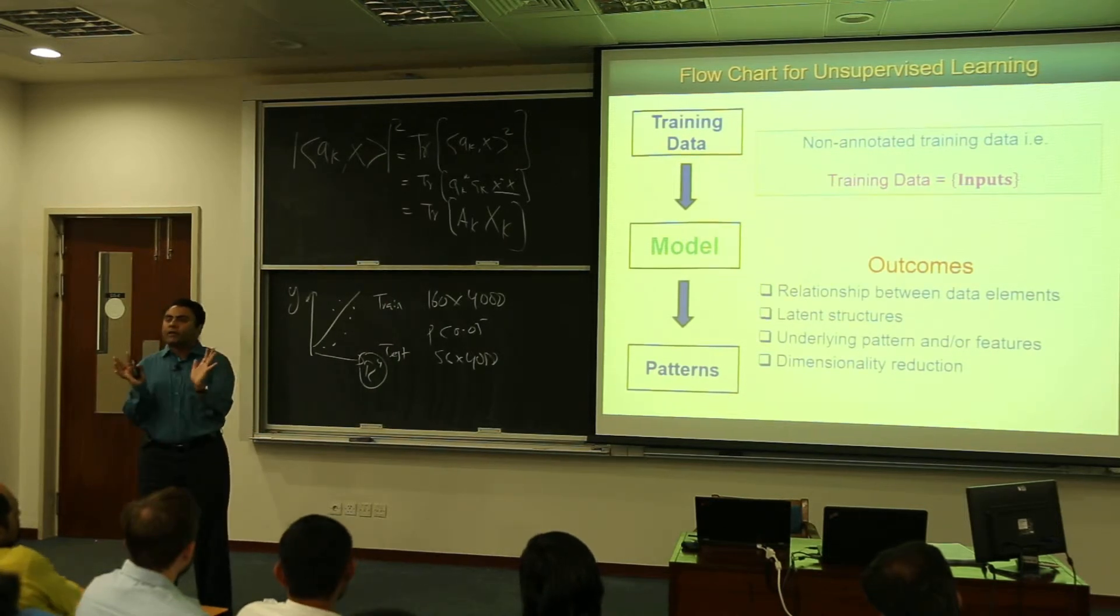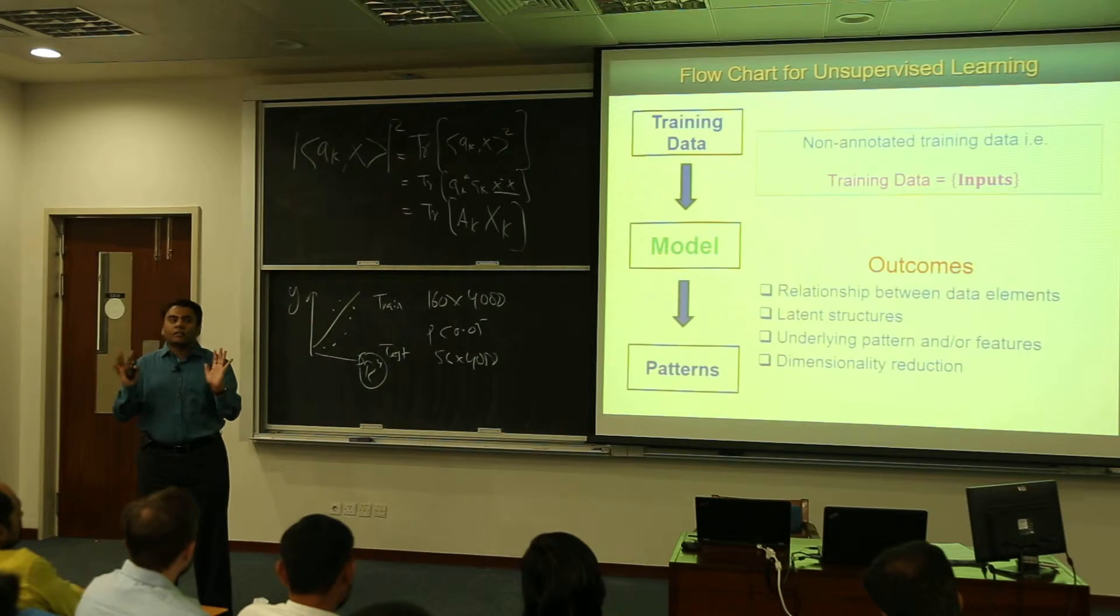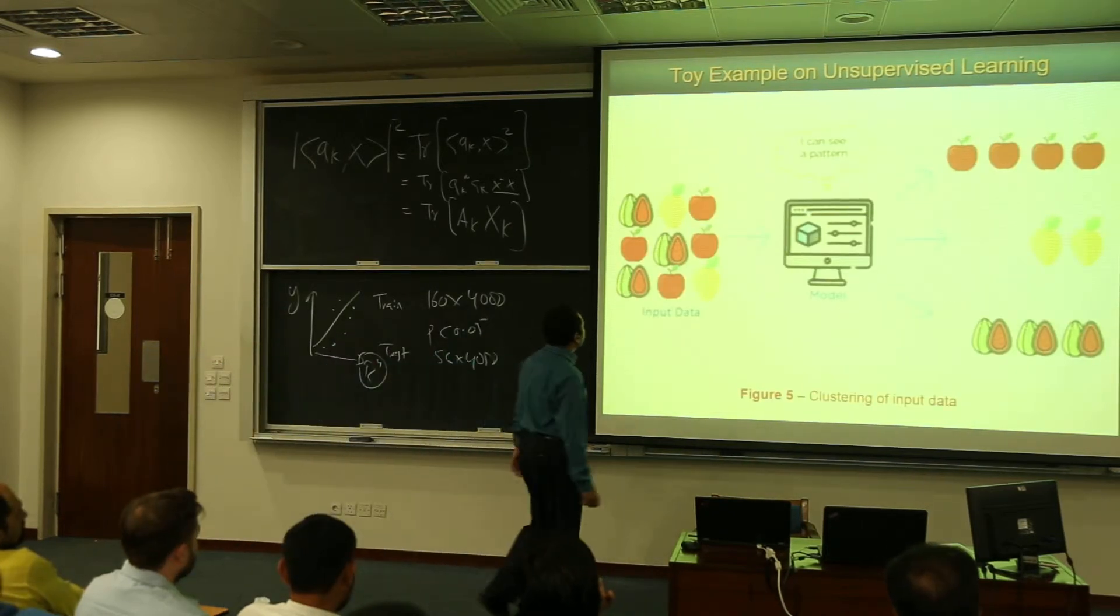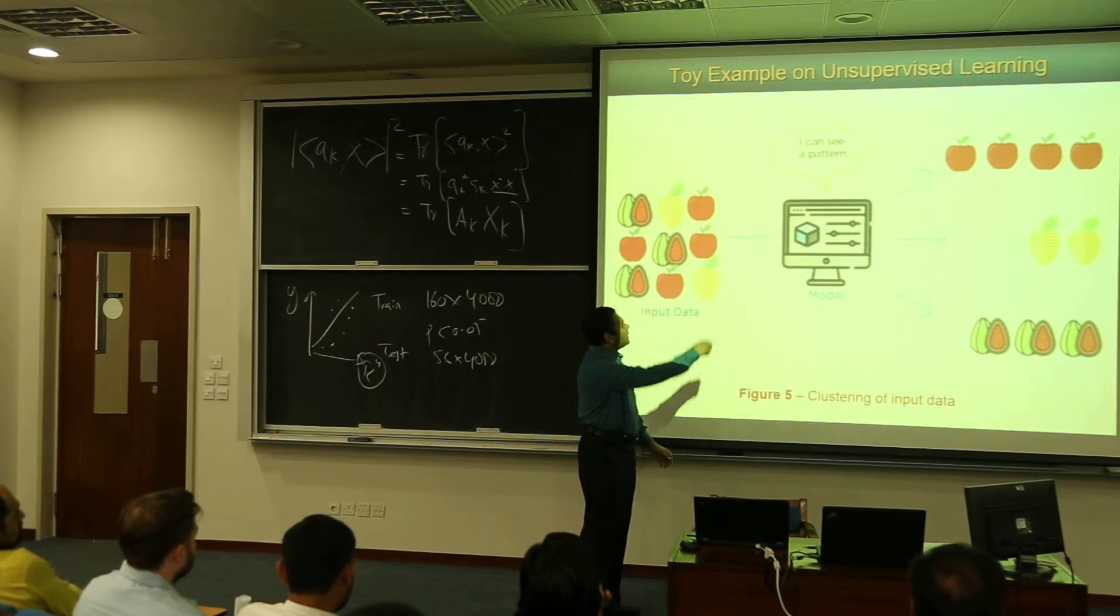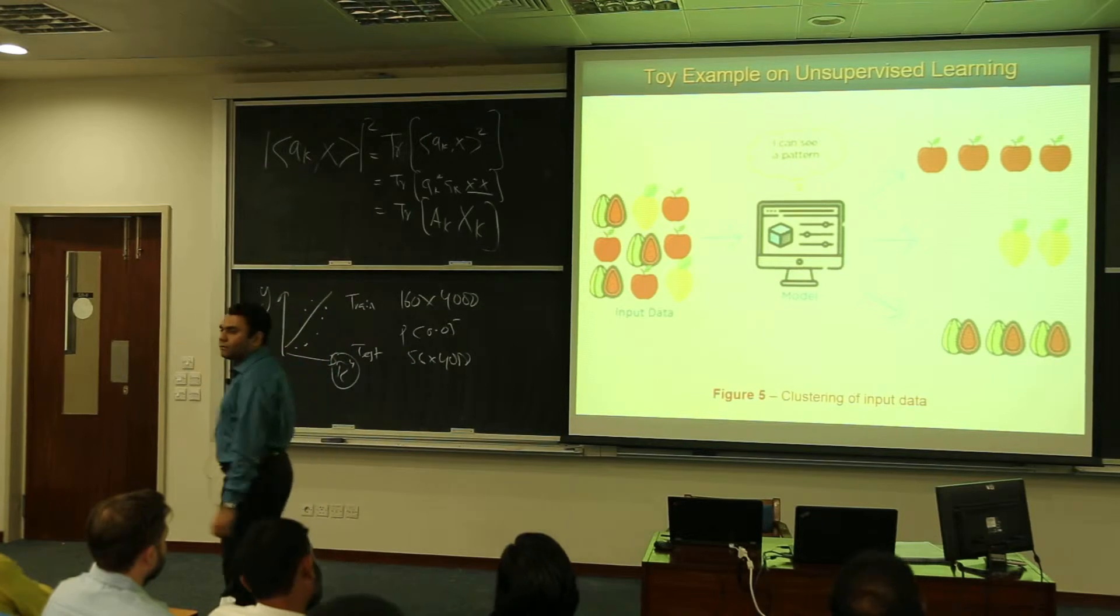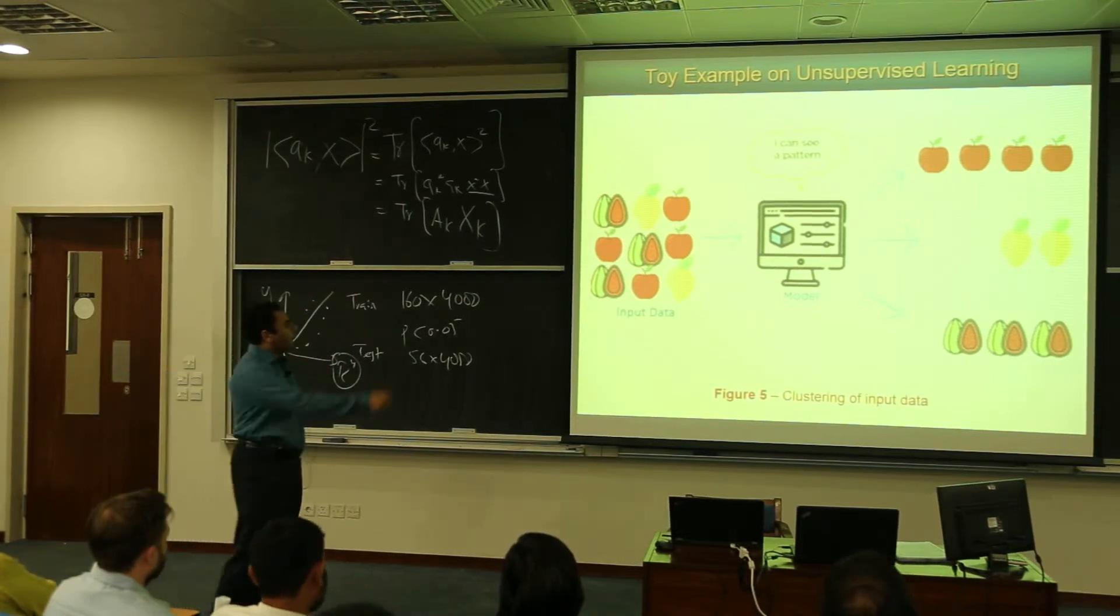I don't need to be flabbergasted that I don't have data. Still, there's a lot I can do with this thing. And there's one example that I took from Google Images. So you have input data, you have an unsupervised learning model. And what it does, it sorts these objects into different fruit baskets: vegetable fruits, apples.